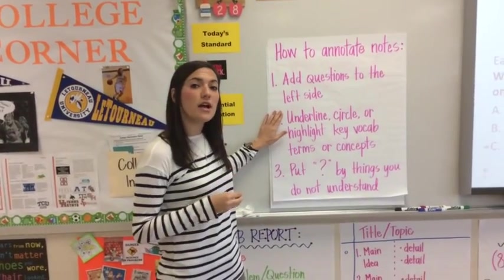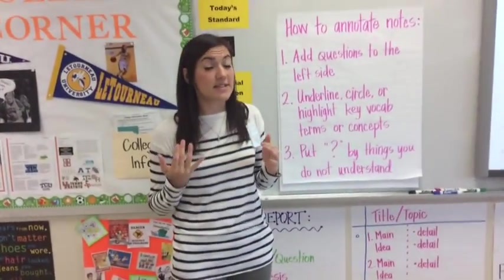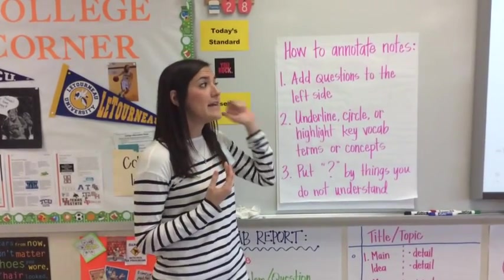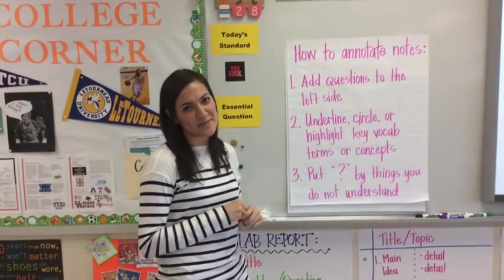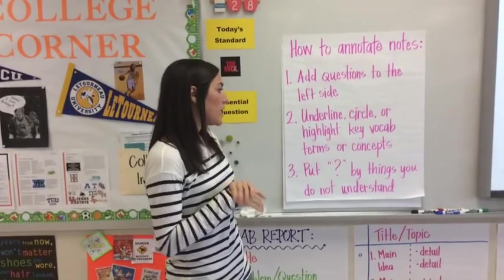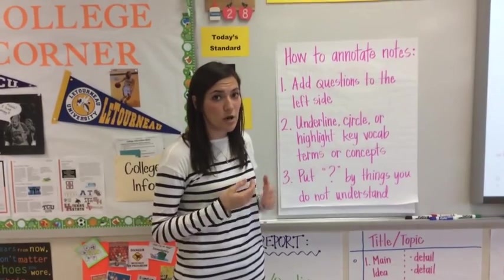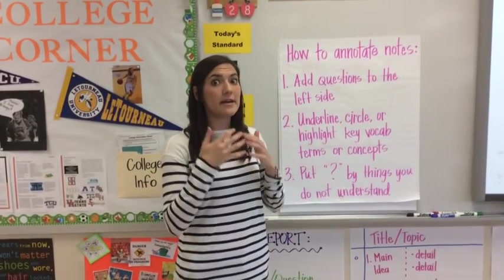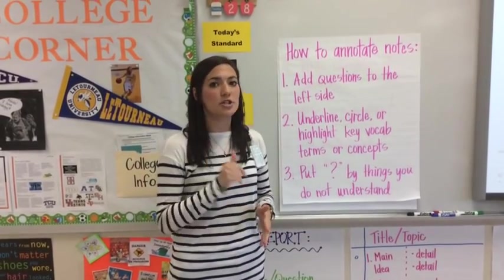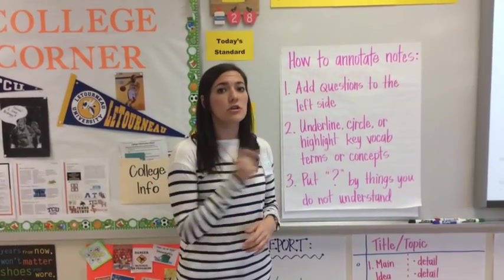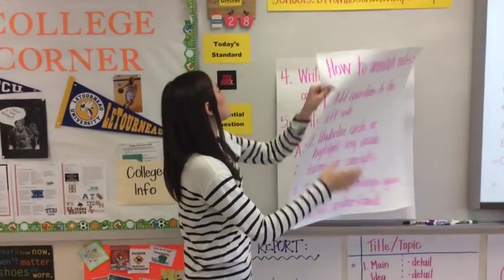The second thing you should do is underline, circle, or highlight any key vocabulary terms. So things like mutation, it's going to be a keyword for our vocabulary today. Another thing you could underline or highlight are key concepts. Something I encourage you to do is put a question mark by things you don't understand. That doesn't mean to put a question mark by every single word you don't understand, but maybe a big concept or a key term that you know is really important. Put a question mark by that and write it in pencil so that you can go back and erase it once you understand what that is, once you talk to your teacher.